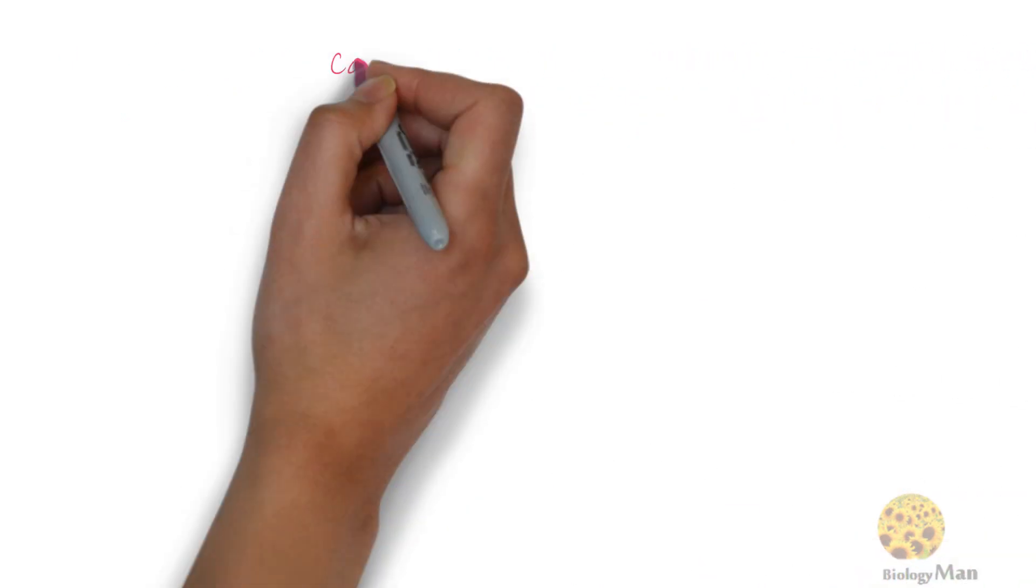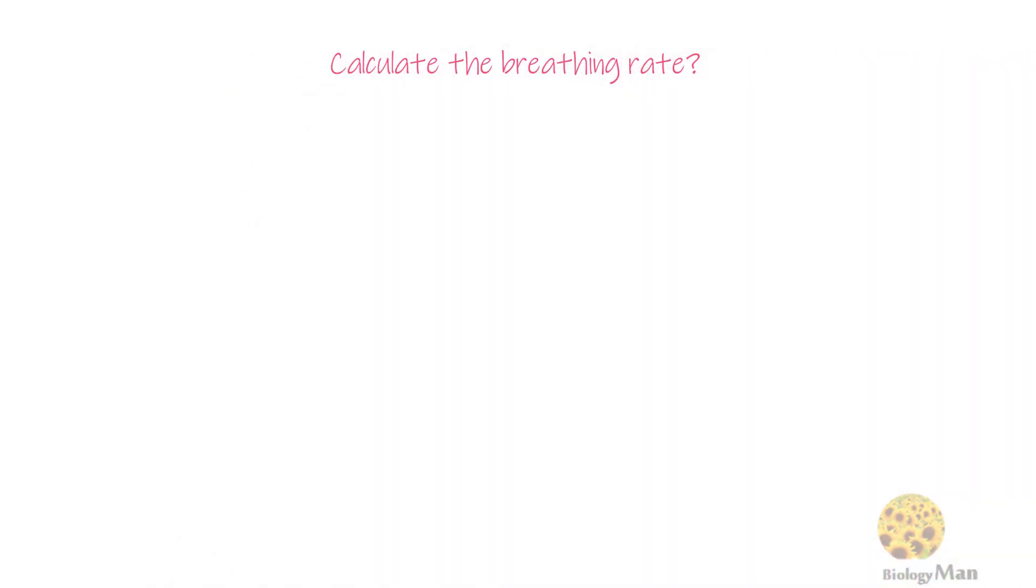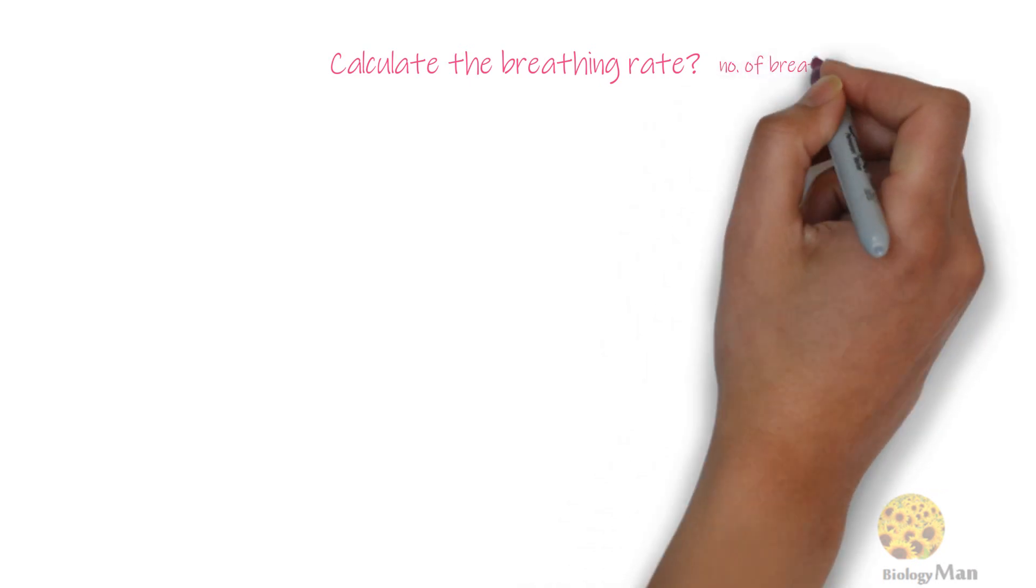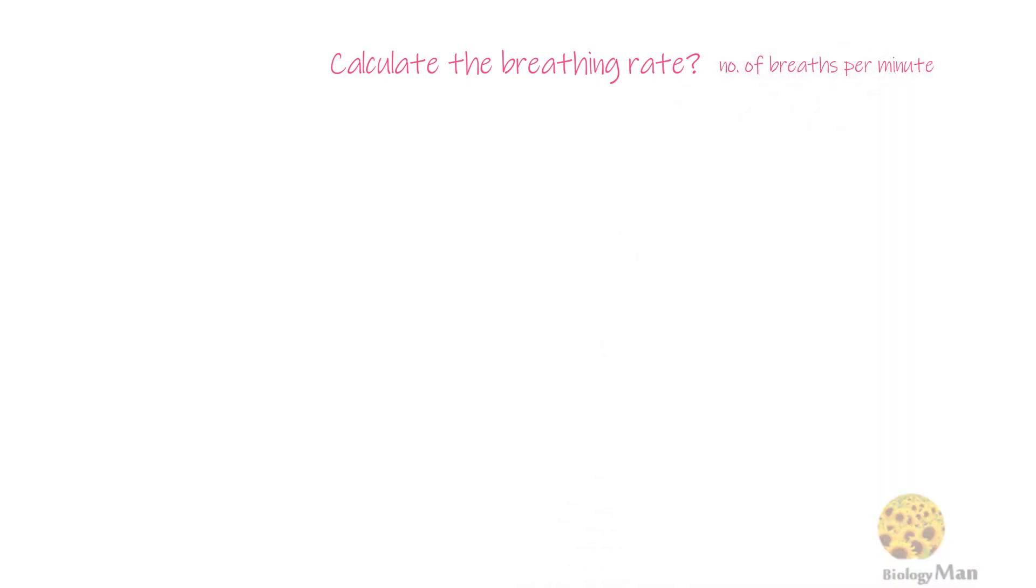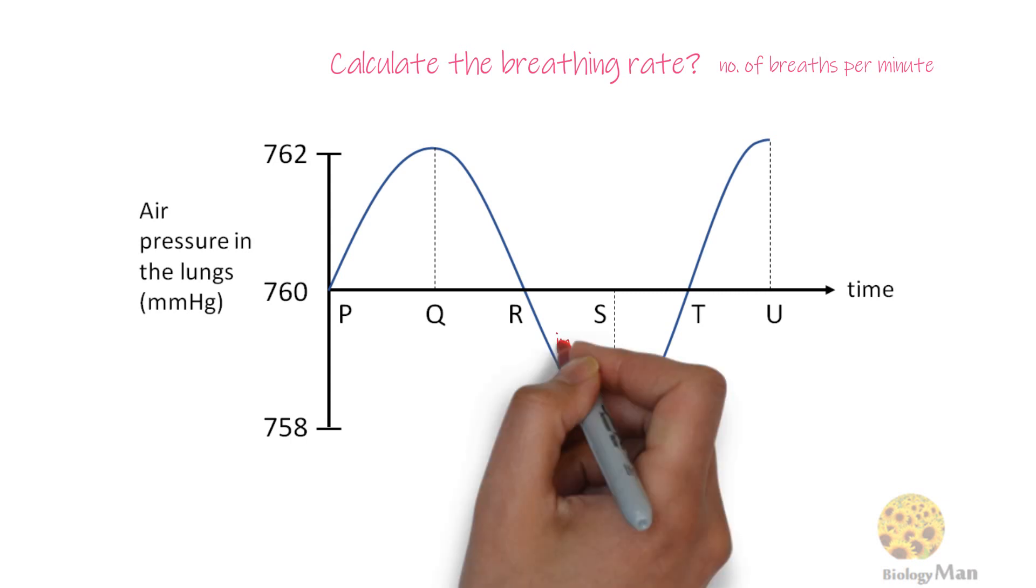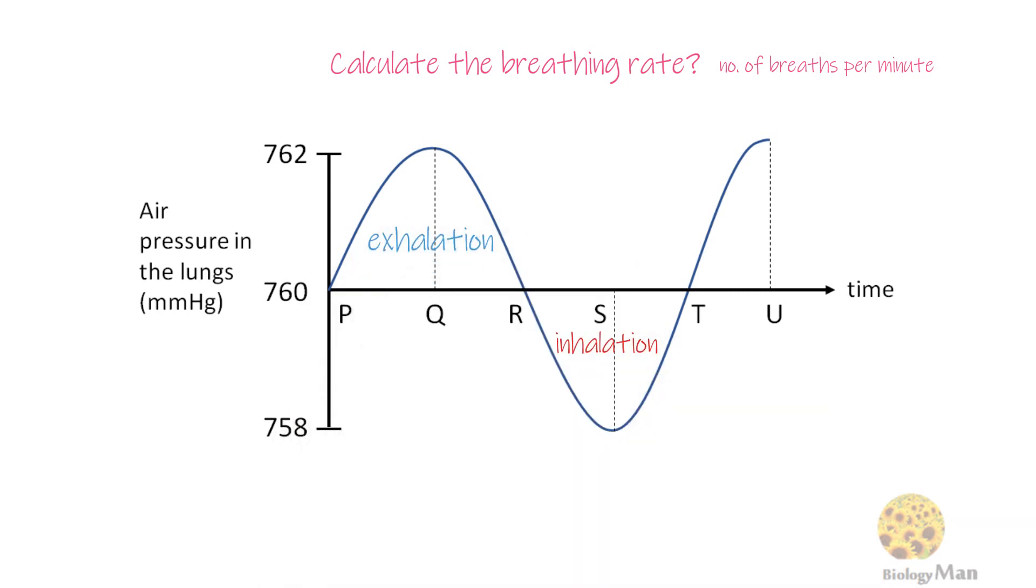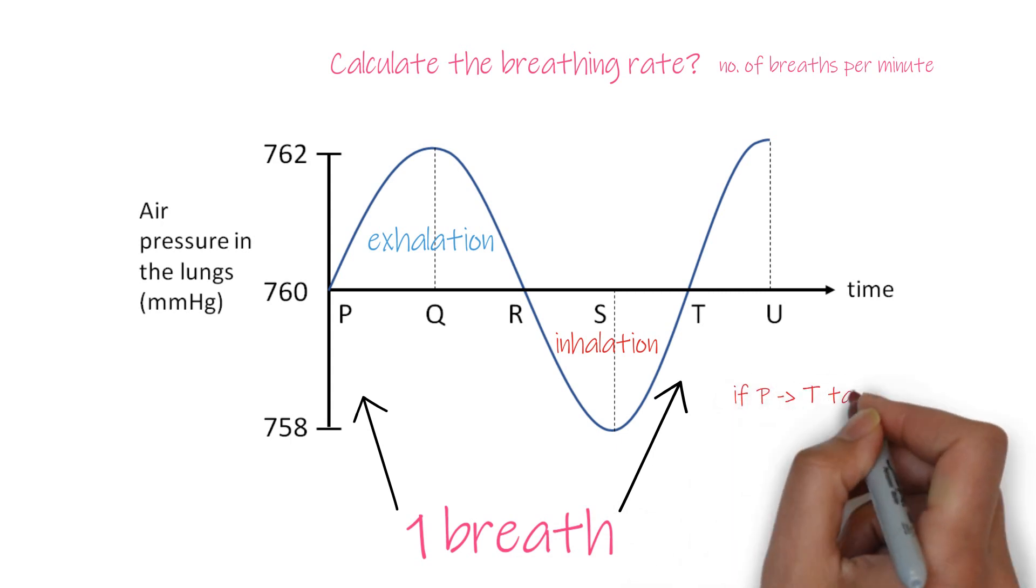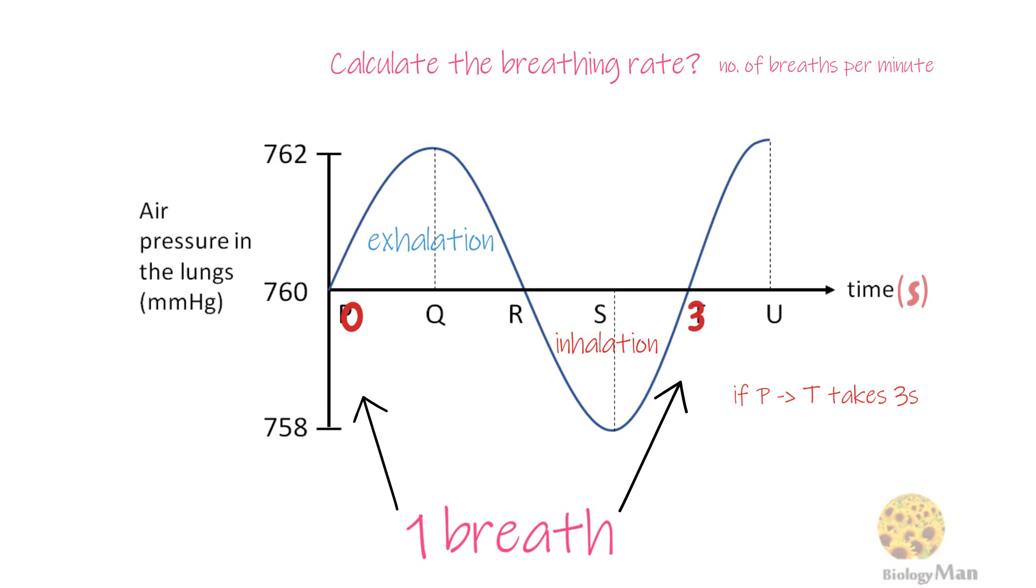Another variation may ask you to calculate the breathing rate. Breathing rate is the number of breaths per minute. You need to identify how much time one single breath including both inhalation and exhalation takes. In this graph, PT is one breath. For instance, if PT takes 3 seconds, there are altogether 20 breaths in one minute. The breathing rate would then be 20 breaths per minute.